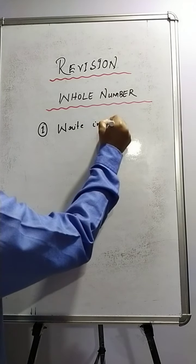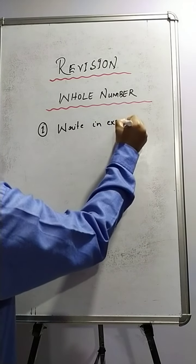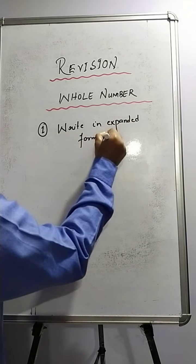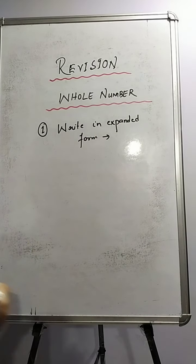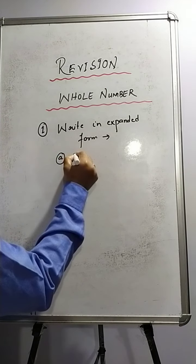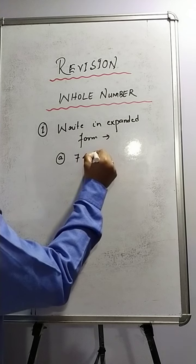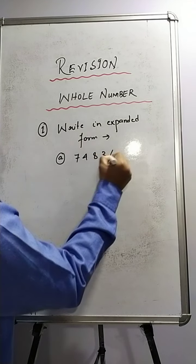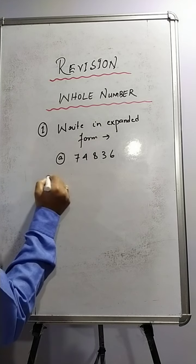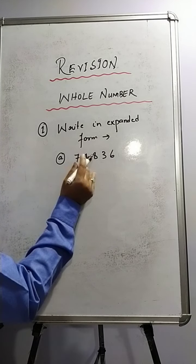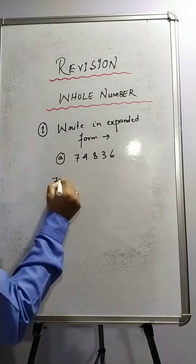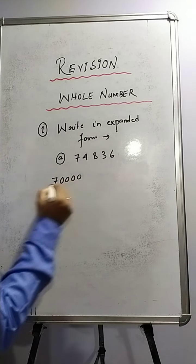Write in expanded form. This is one of the most important questions. Suppose a number is given: 74836. Now how to expand this. You count how many digits are there after 7 — that is 1, 2, 3, 4 — so you will put 4 zeros after 7.